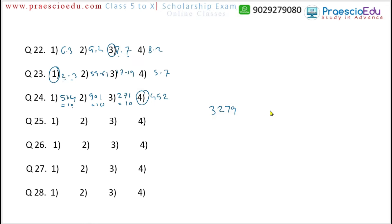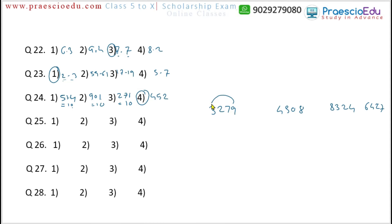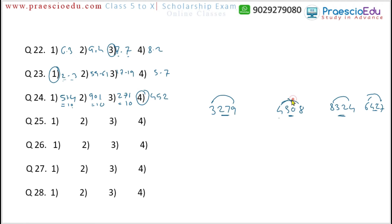Question 25: options are 2379, 4308, 8324, and 6427. The pattern is: the outer digits (thousands and units) multiplied give the middle digits. For 2379: 3×7=21 (middle digits); for 8324: 8×4=32; for 6427: 6×7=42. But for 4308: 4×8=32, yet 30 is shown instead of 32. So option 2 is the different one.